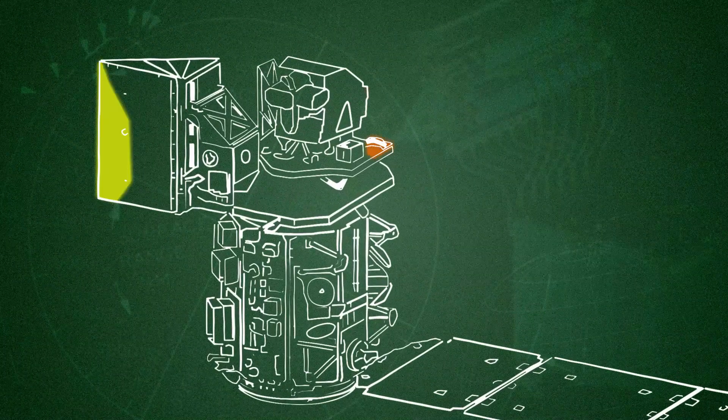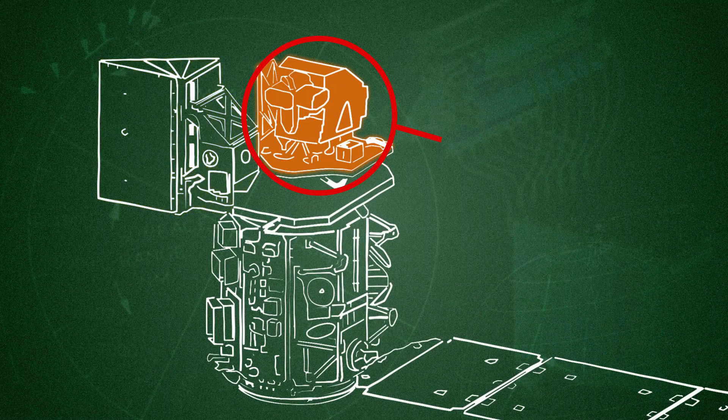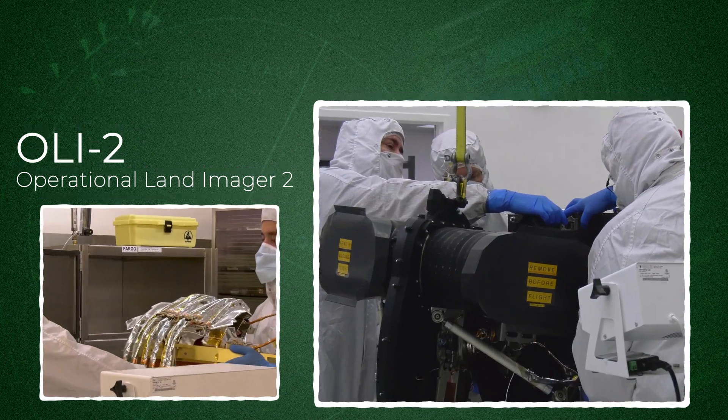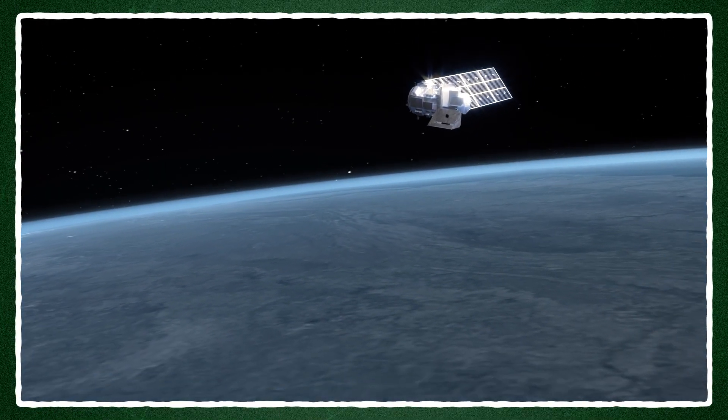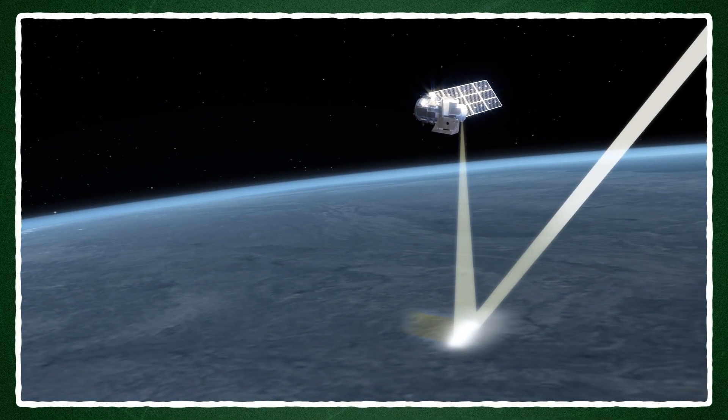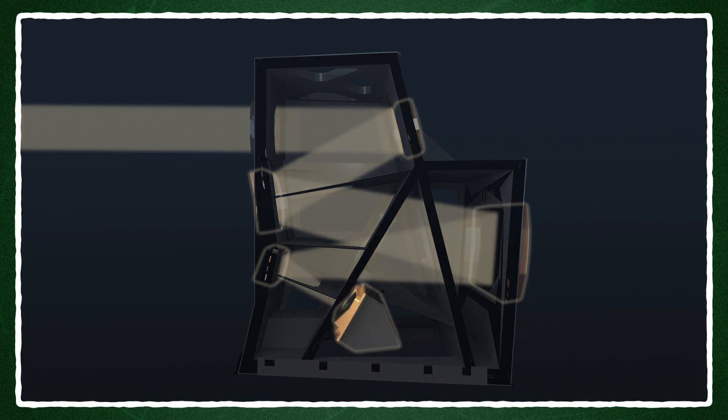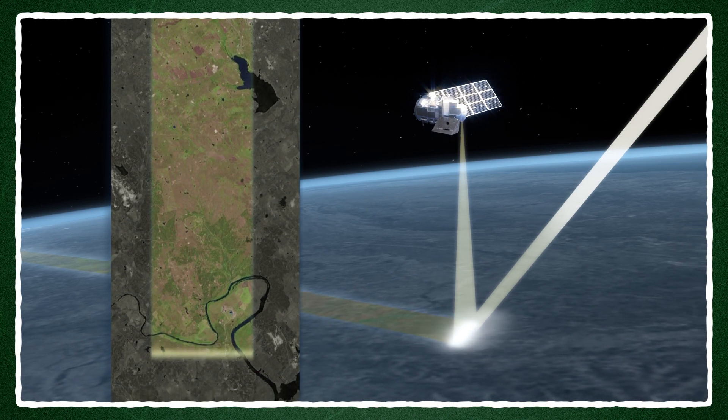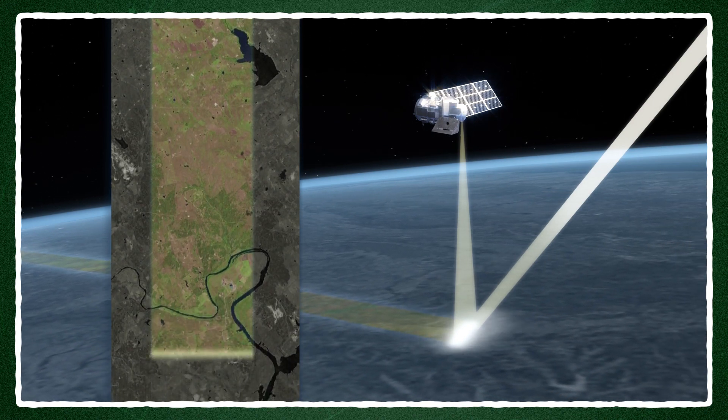There are two instruments aboard Landsat 9. OLI-2 is all about light. Once in orbit, OLI-2 collects sunlight reflected off Earth's surface. The light passes through a set of filters to separate out nine specific wavelength bands, visible and infrared frequencies. Each band provides different pieces of information about what is down on the surface.